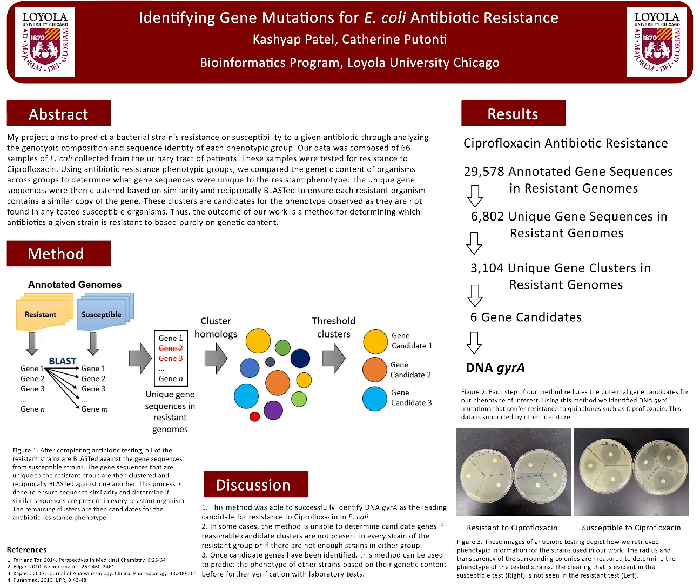My project aims to predict a bacterial strain's resistance or susceptibility to a given antibiotic through analyzing the genotypic composition and sequence identity of each phenotypic group. Our data was composed of 66 samples of E. coli collected from the urinary tract of patients. These samples were tested for resistance to ciprofloxacin. Using antibiotic resistance phenotypic groups, we compared the genetic content of organisms across groups to determine what gene sequences were unique to the resistant phenotype.